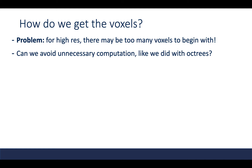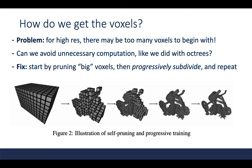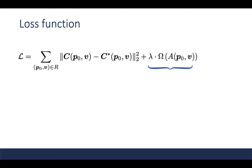To avoid unnecessary computation and work at the right level of detail, we start by pruning large voxels, then progressively subdivide these voxels to get smaller ones, and repeat the process. At each stage of training, we use an appropriate level of detail for computational efficiency. The loss function is very similar to other NeRF papers, with an additional term that encourages the transmittance to be either 0 or 1, which reduces some artifacts.